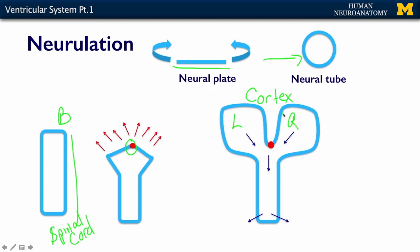As the bubbles develop, the inside — the lumen of those bubbles — just kind of continues on. So this will be your left ventricle and your right ventricle. The third ventricle remains on the midline. The cerebral aqueduct leads down to the fourth ventricle, and the lumen still persists into the spinal cord as your central canal. We'll talk more about the central canal when we cover the spinal cord in a later series of lectures.